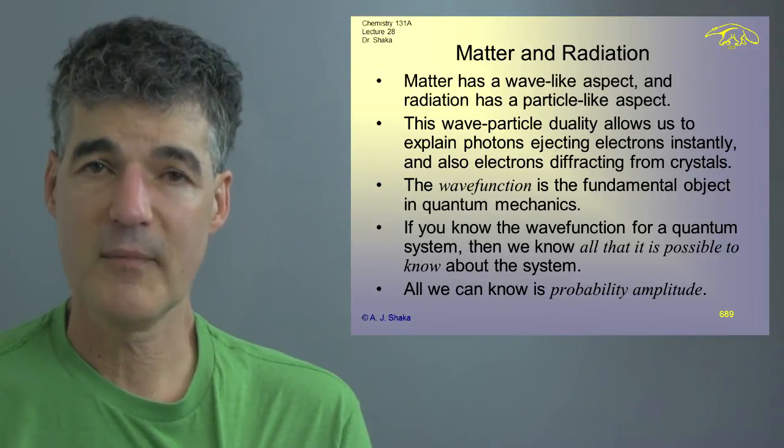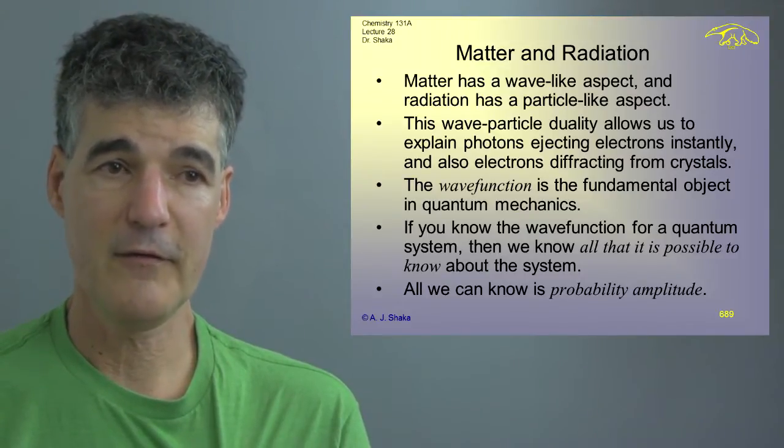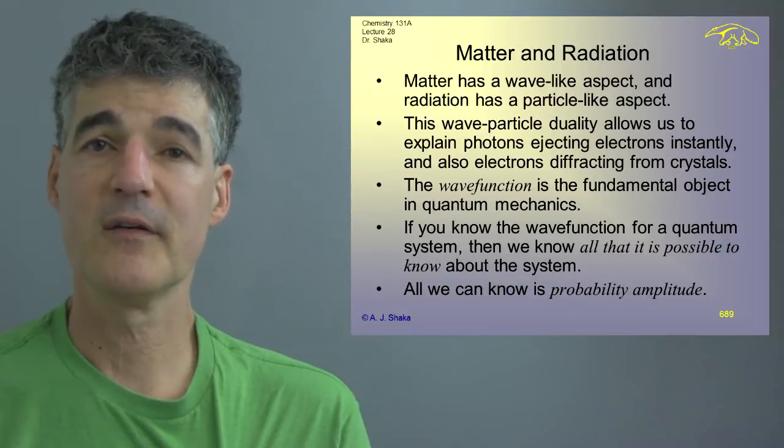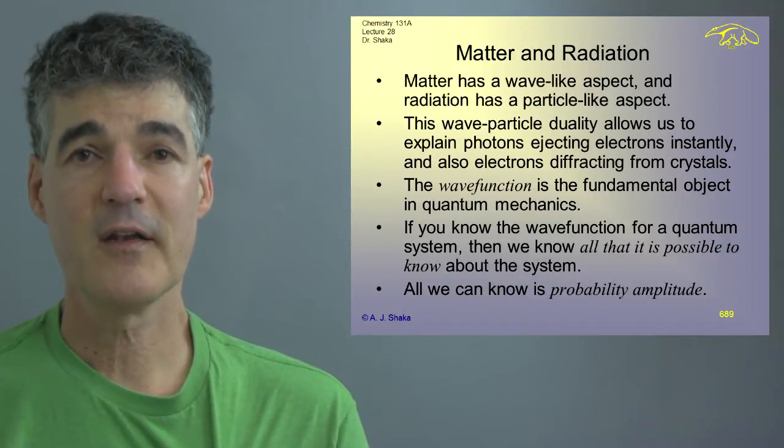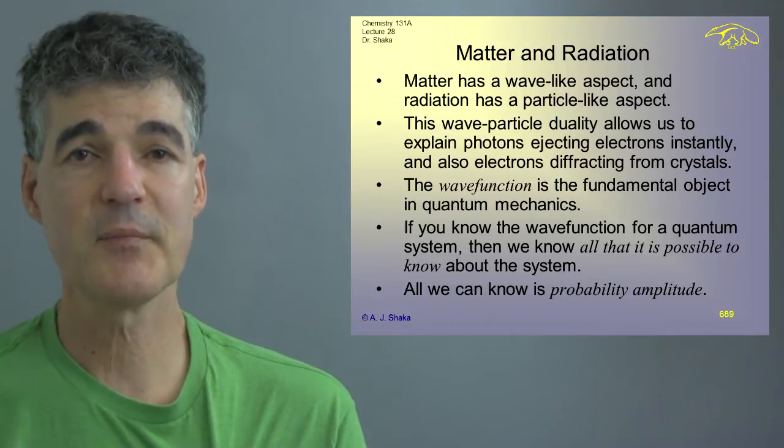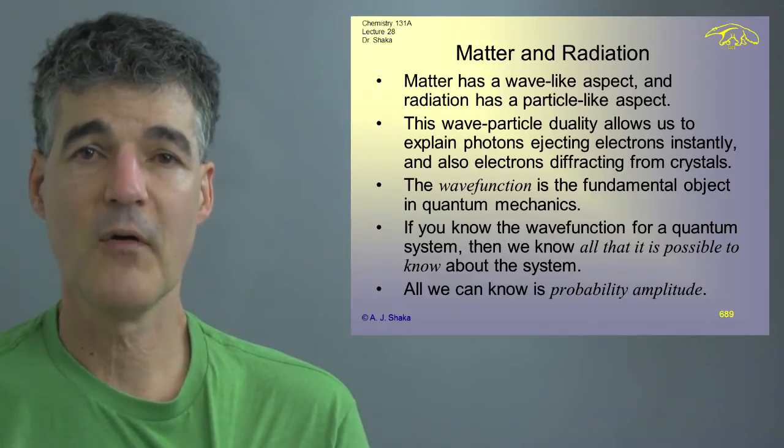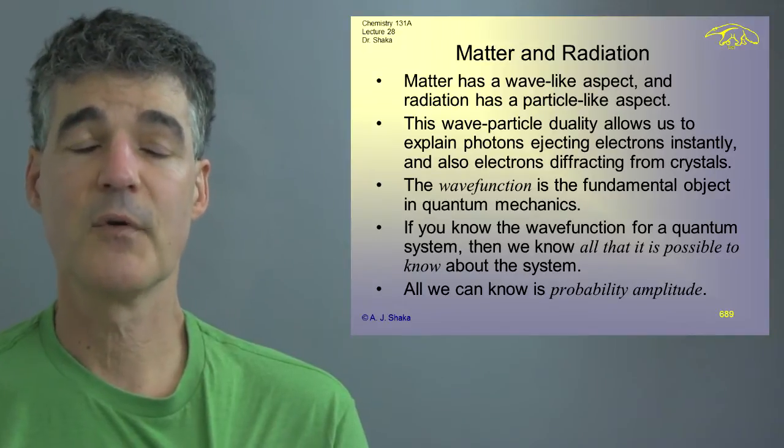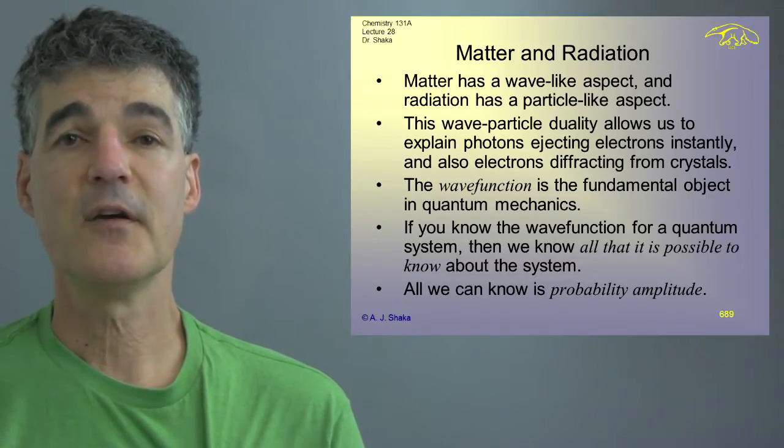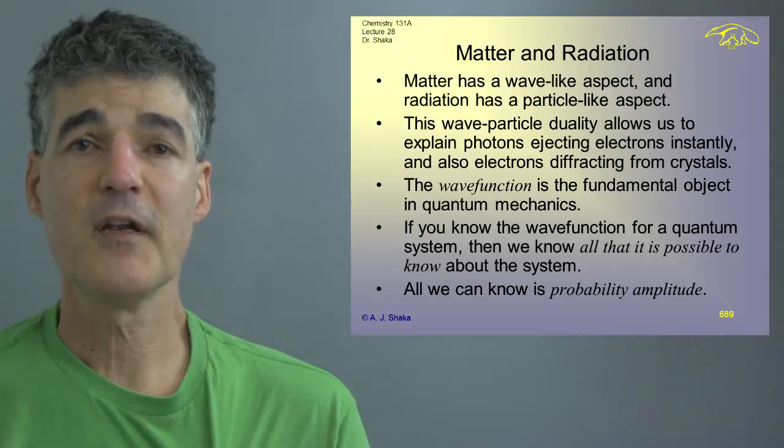The wave function we decided is the fundamental object in quantum mechanics. That's the thing that's common to everything. And if we know the wave function, then we know all that it is possible to know about the quantum mechanical system. That means as a corollary that usually we do not know the wave function in all its glory. We only know some aspect of it depending on what we've chosen to measure, but we don't know everything that it's possible to know about most systems, even very small quantum systems where we're trying to control everything. And all we can know is the probability density or probability amplitude, which is the wave function. But what we measure is the probability density. And that's the fundamental thing.